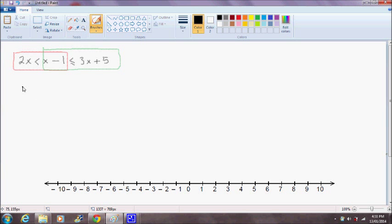So in the first instance, 2x is less than x minus 1. This is pretty simple. As I said in my previous video on inequalities, we can treat them exactly the same way as we would treat a normal equation.